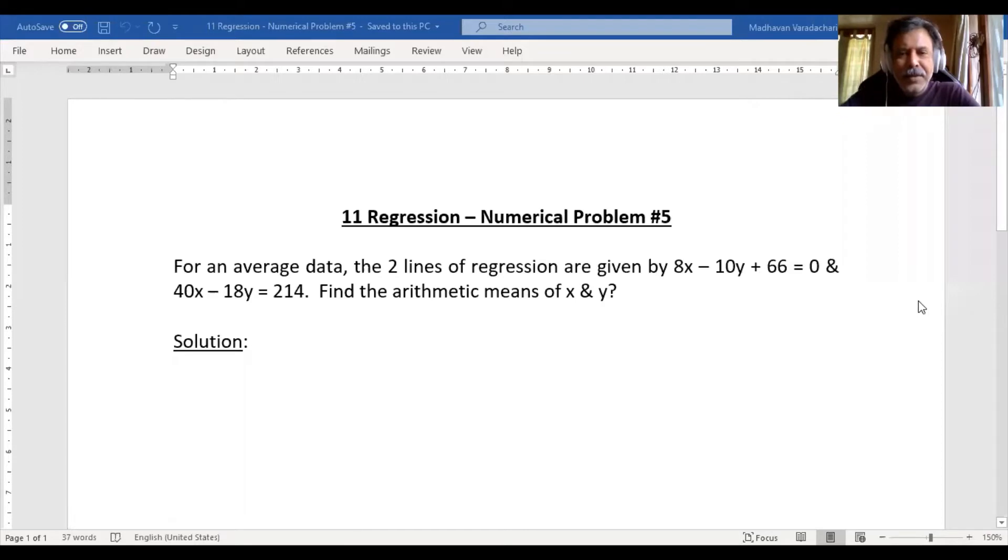Hello everyone, this is question number 5 in numerical problems. For an average data, the two lines of regression are given by 8x - 10y + 66 = 0 and 40x - 18y = 214. The question is to find the arithmetic means of X and Y.